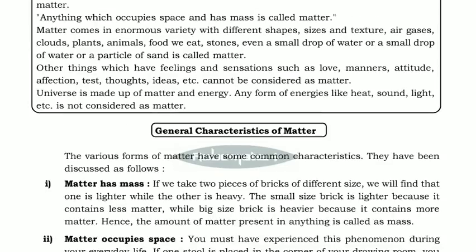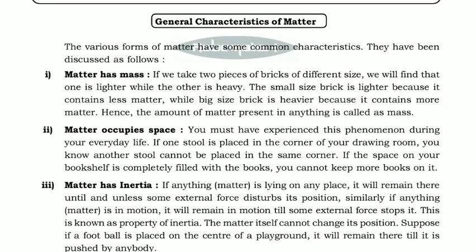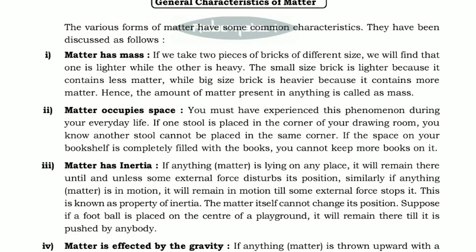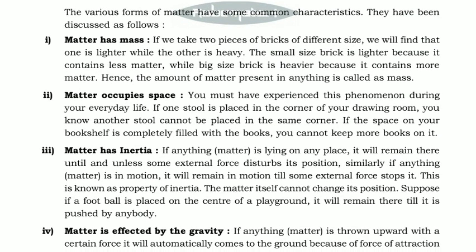Now let's look at the general characteristics of matter. First, matter has mass. Anything which has mass and occupies space is matter. Suppose we have two bricks — one heavy and one lighter. The heavy brick must have more matter in it, and the lighter brick must have less matter. So we can understand that matter has mass.